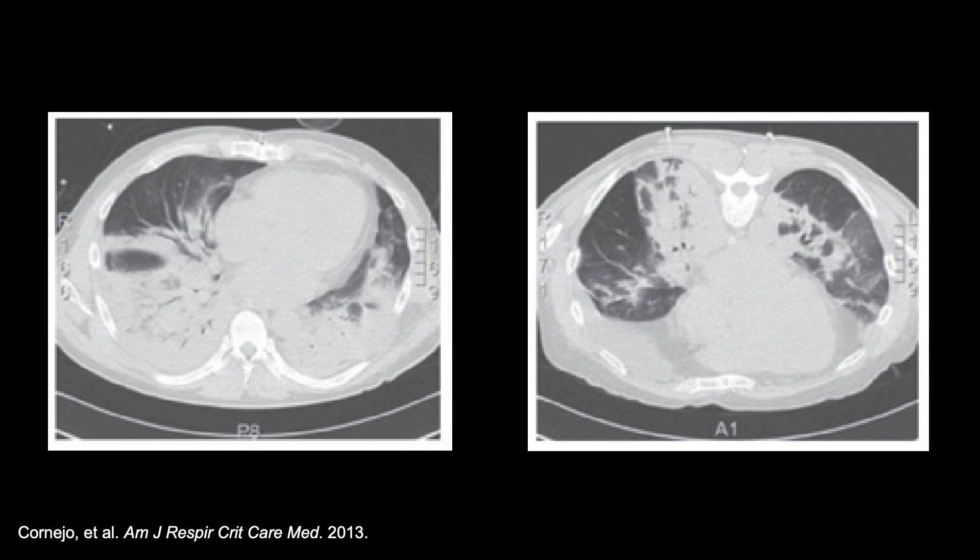In the second picture, when the patient is placed prone, there is better recruitment — though not complete recruitment — of that dependent lung area, resulting in better V/Q matching in the dorsal lung zones.